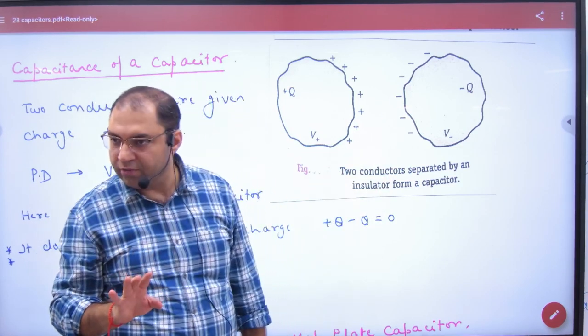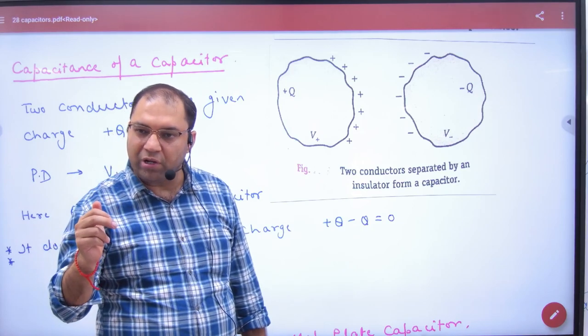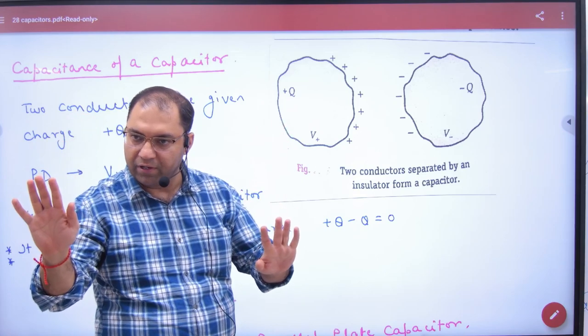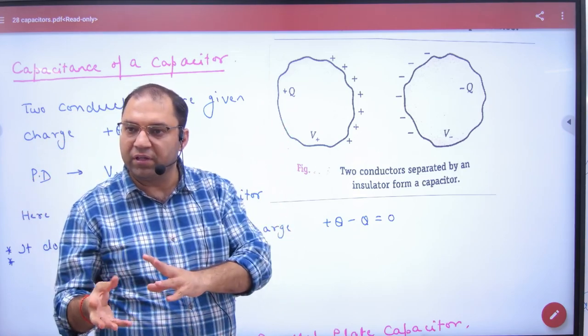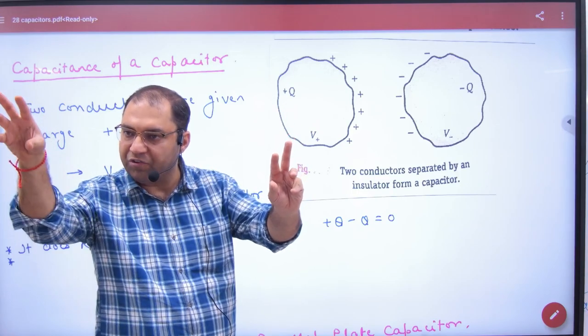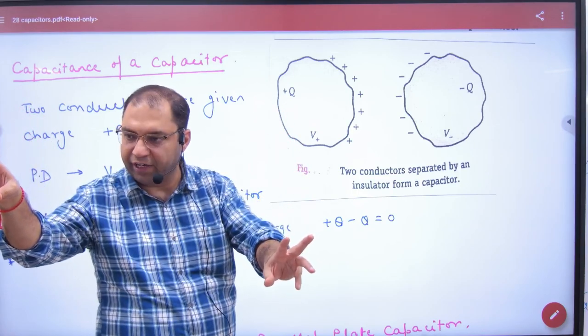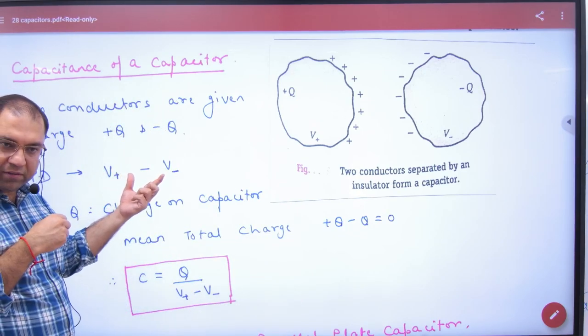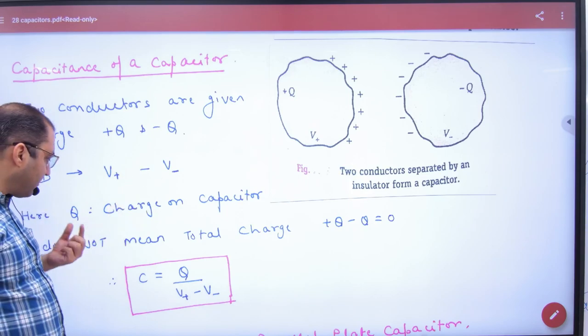Clear. So positive potential big, negative potential small, simple. So potential difference is big potential minus small potential. Big potential is V positive, small potential is V negative. So potential difference, if I calculate V positive minus V negative, the capacitance is what?